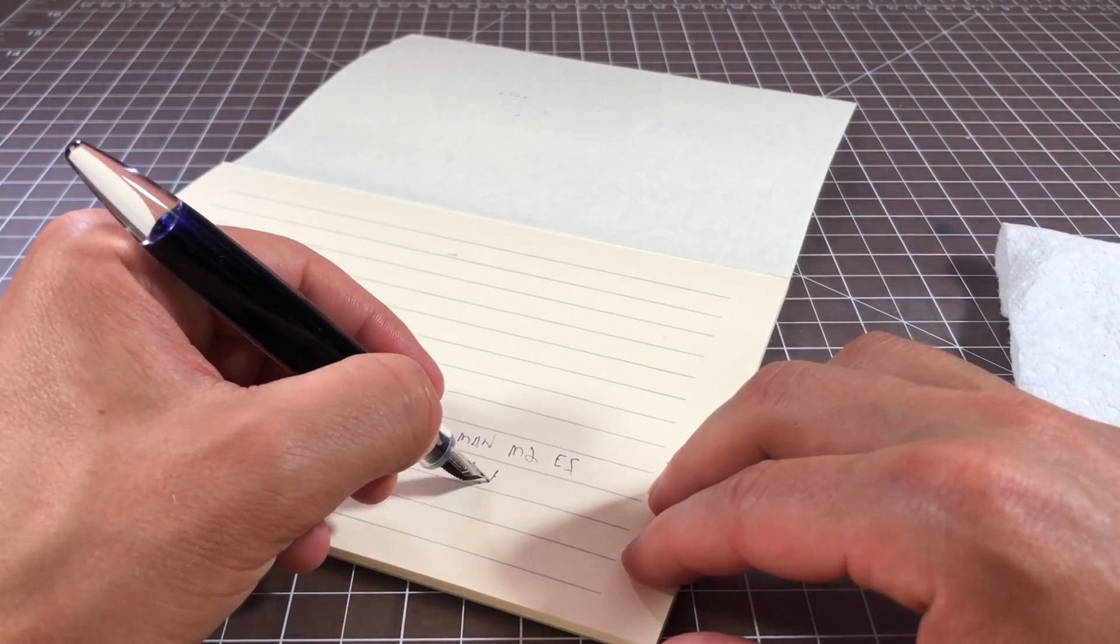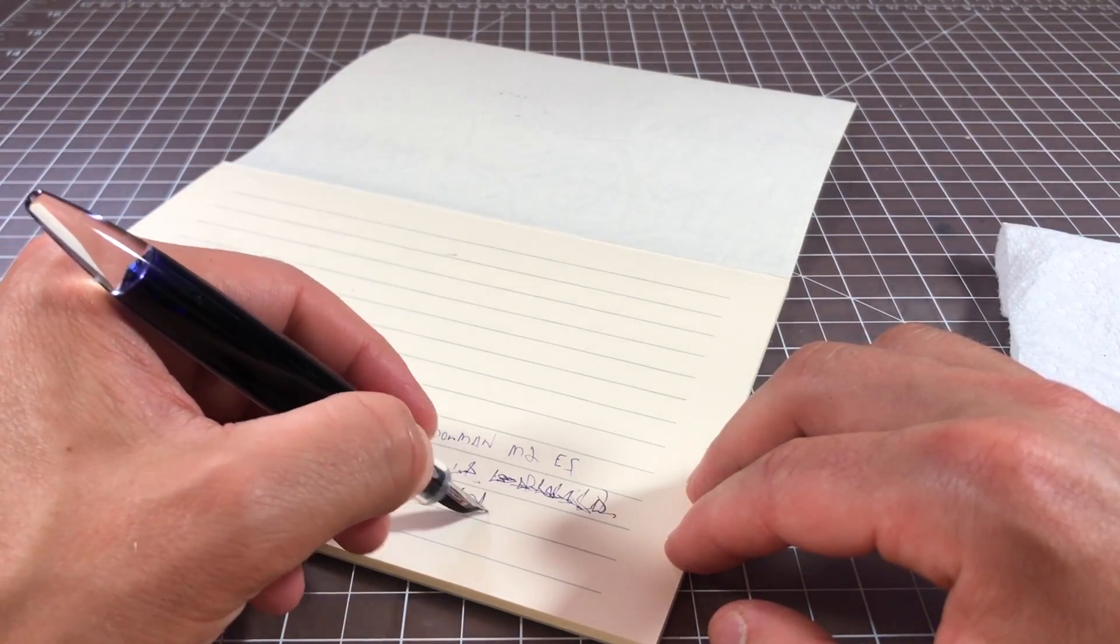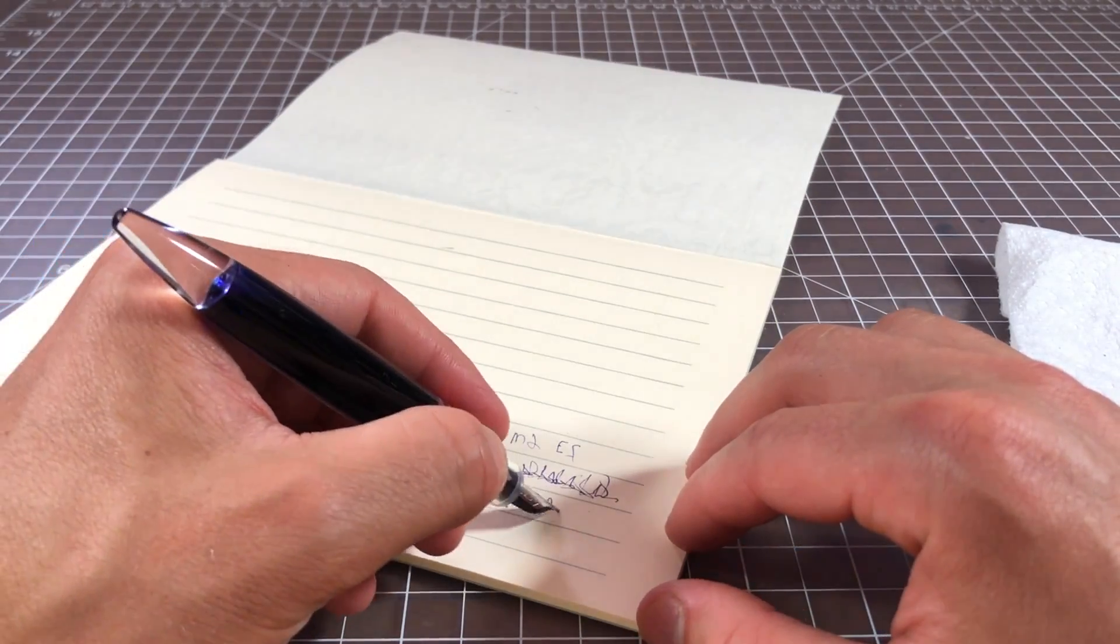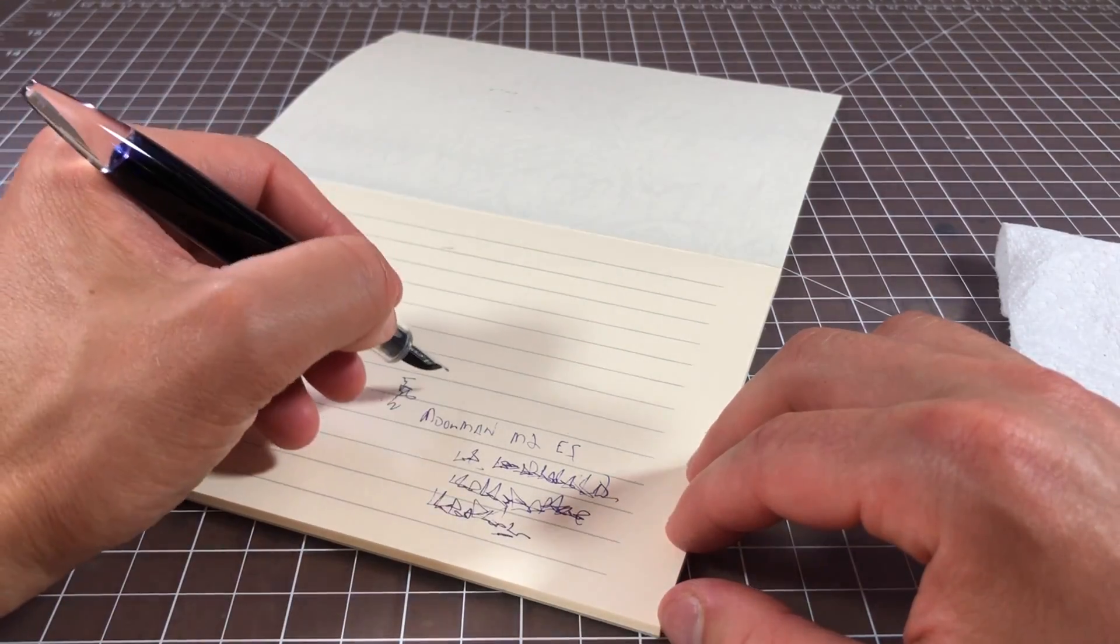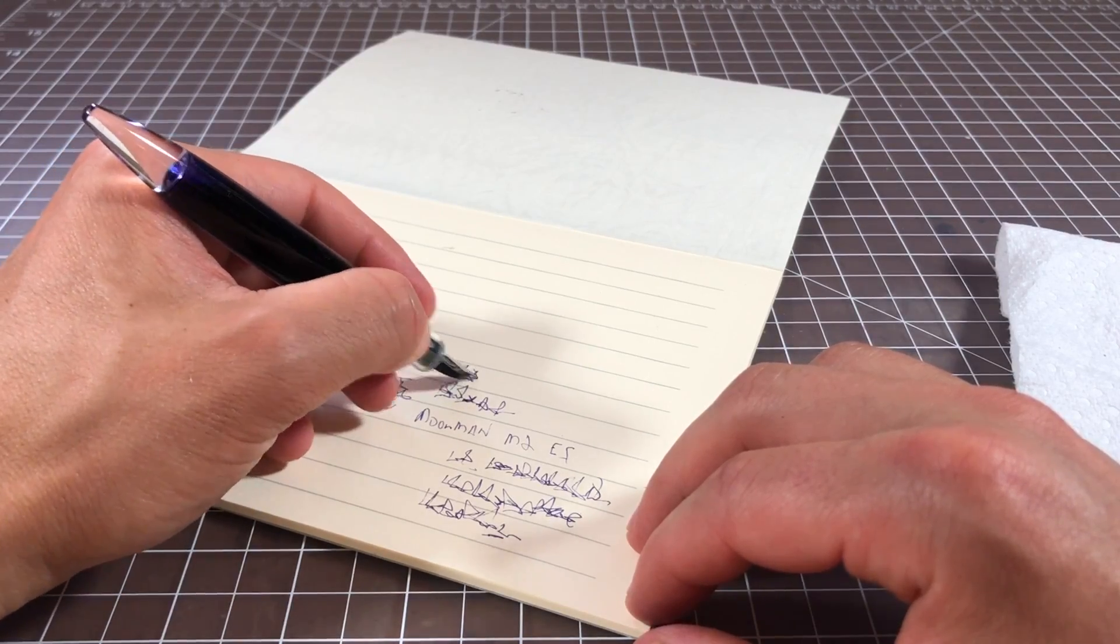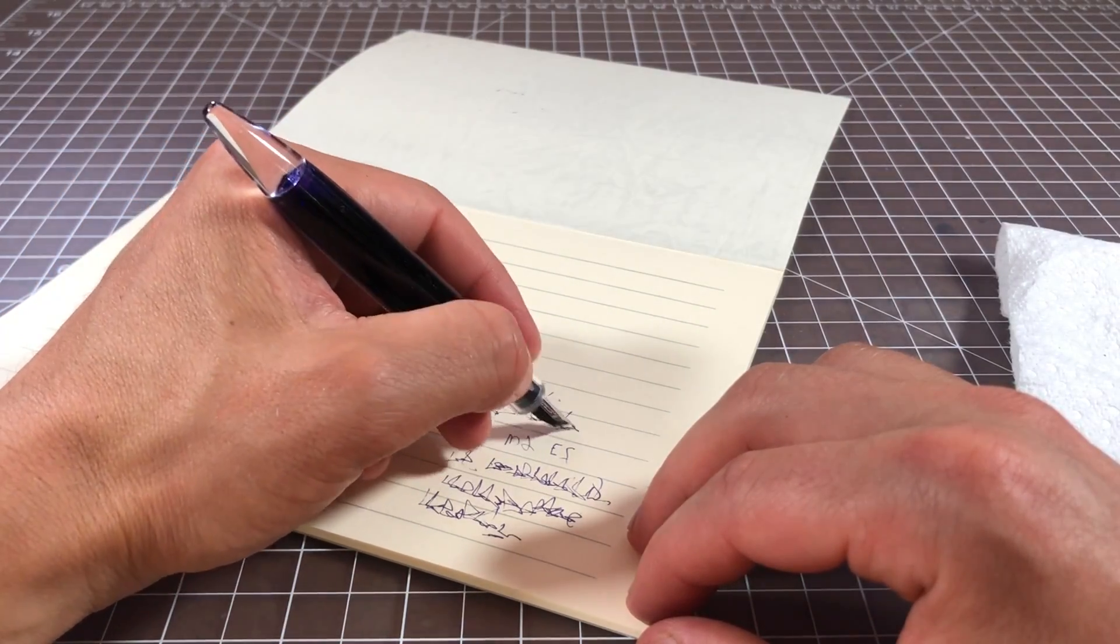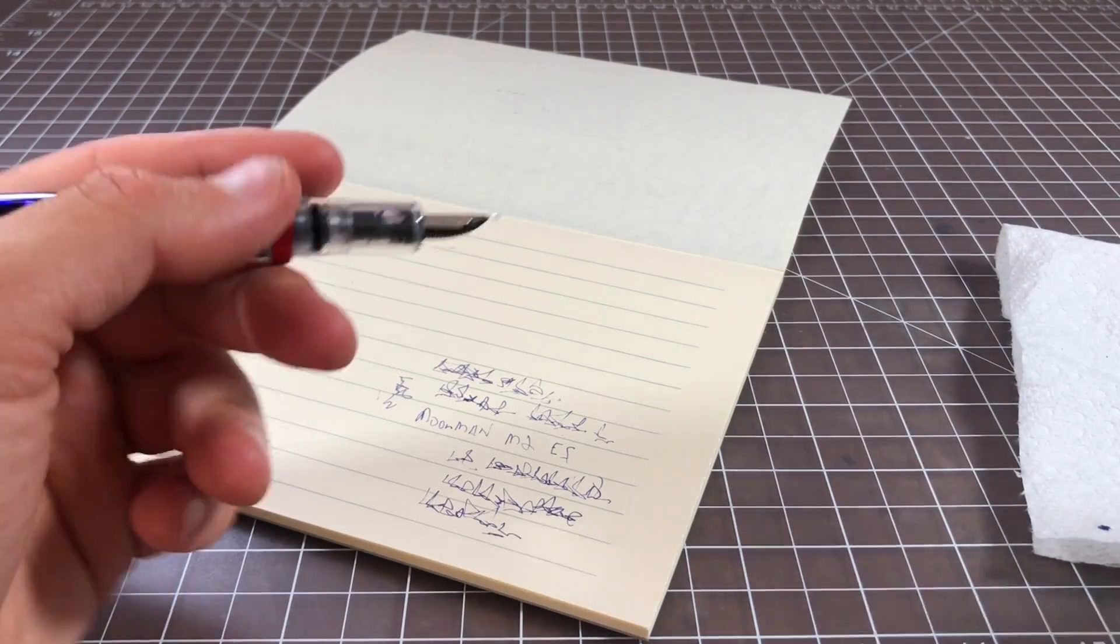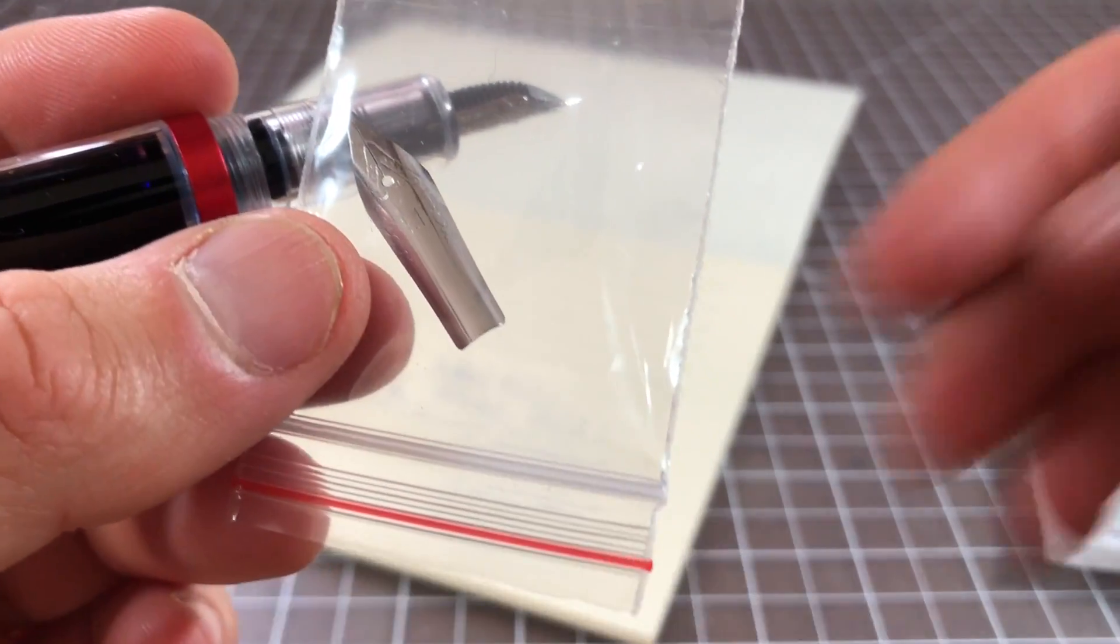This is the Moonman M2 extra fine. The Moonman nibs, I've always found them to be adequate. I don't think they're exceptionally smooth. If you want a really nice nib from a Chinese manufacturer, I'd say go with PenBBS. They're kind of leading the way. But the Moonman nibs are reliable and completely fine, though they're going to lack the smoothness of some other brands, especially in the extra fine. This might also be available in a medium. You can obviously swap out this nib. You could put in this 1.1 millimeter stub nib, which is generally a fun nib to have.